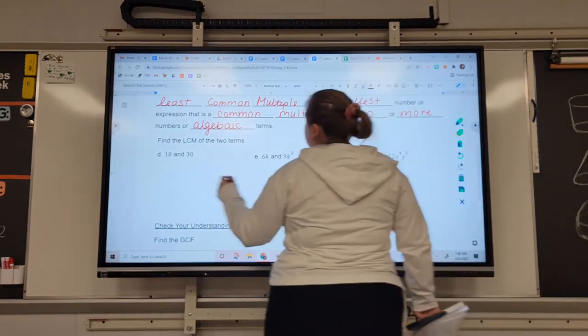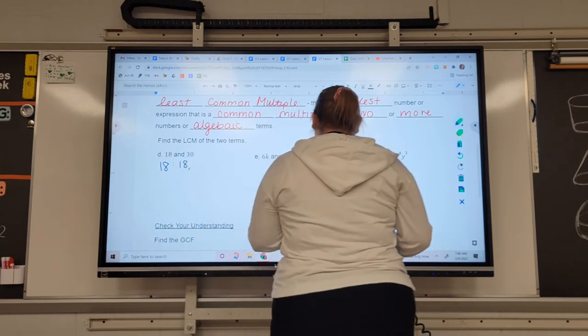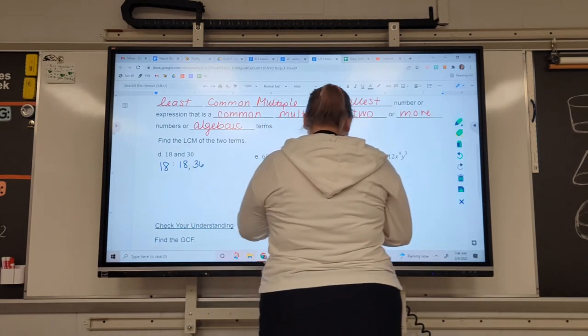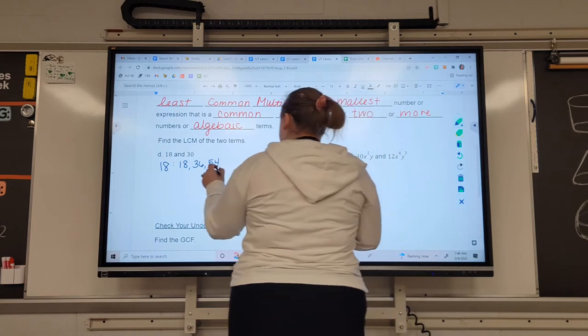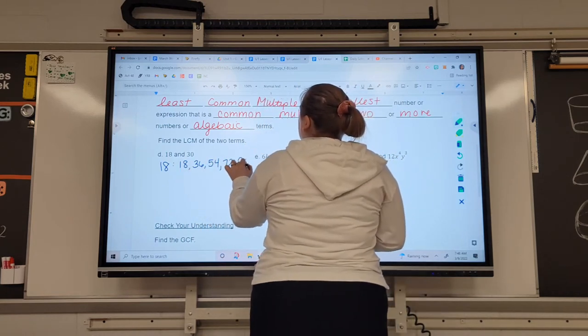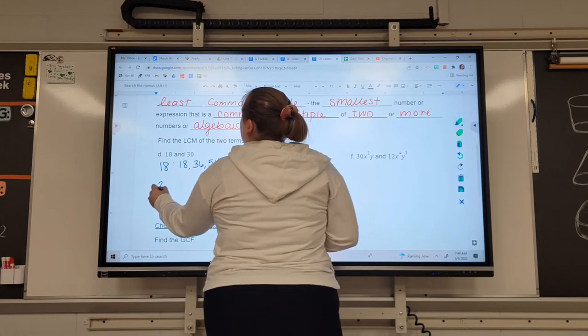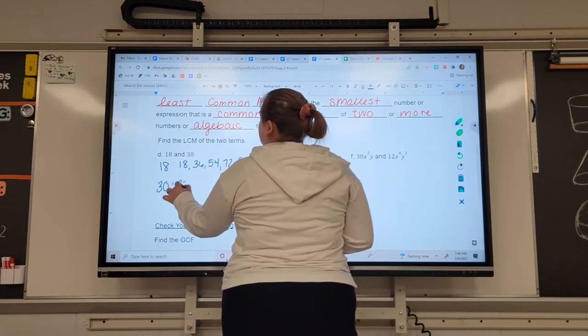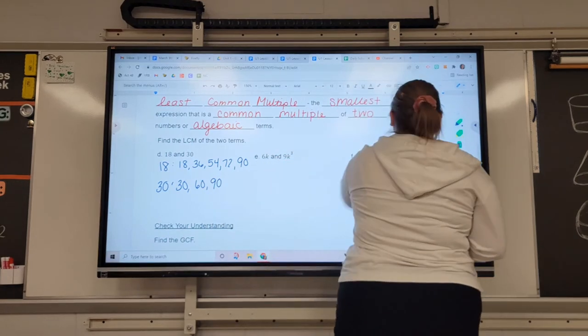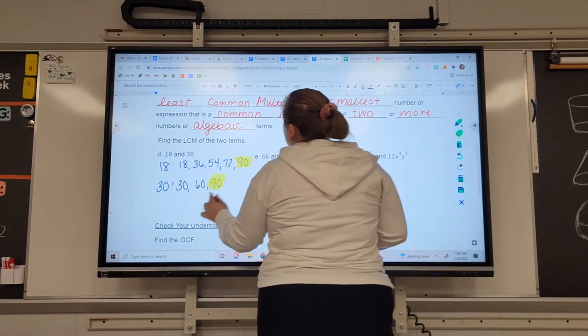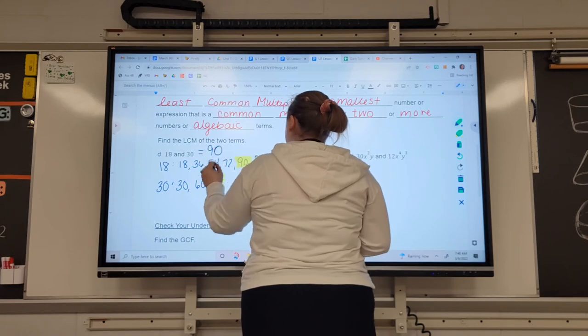So for this 18, we have 18 times 1 is 18, 18 times 2 is 36, 18 times 3 is 54, 18 times 4 is 72, and 18 times 5 is 90. And you can continue this on, but the goal is to get one that matches. 30 times 1 is 30, 30 times 2 is 60, 30 times 3 is 90. And there we are. We have our first match. Those are the least common multiples. Those two match. So the LCM of 18 and 30 is 90.